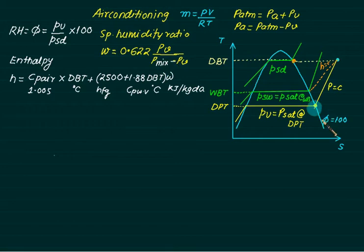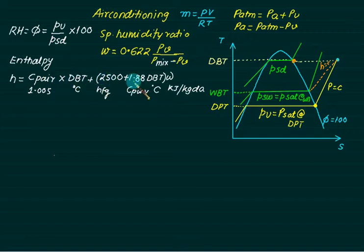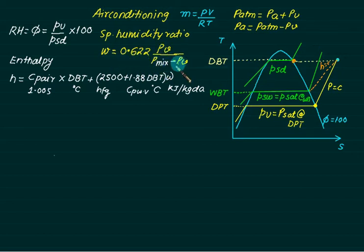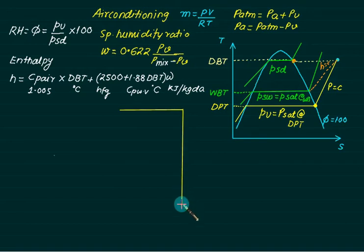For ordinary (unsaturated) conditions, dry bulb temperature > wet bulb temperature > dew point temperature, and Pv < P_sd. The minimum value of phi is 0 (dry air) and maximum is 100% (saturated air). Enthalpy: h = Cp_air × T_dbt + (2500 + 1.88 × T_dbt) × w, with temperature in degrees Celsius. Dalton's law: P_total = sum of constituent pressures. Specific humidity: w = 0.622 × Pv / (P_mix − Pv). All these values can be read from the psychrometric chart.